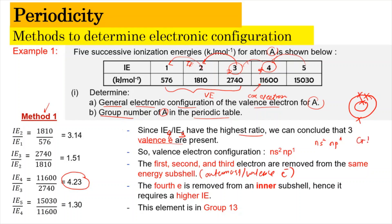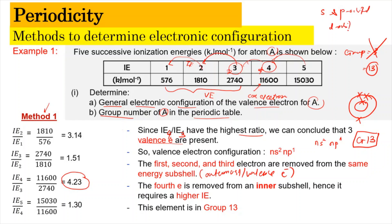Therefore, the valence electronic configuration is Ns2 2p1. The first, second, and third electrons removed are from the same outermost energy subshell, and the fourth electron is removed from the inner subshell, requiring higher ionization energy. Because there are 3 valence electrons, atom A is in Group 13 — not Group 3 — since for ionization energy purposes, we only deal with S and P orbitals (not D), so we add 10.